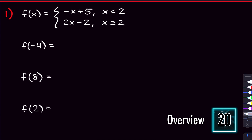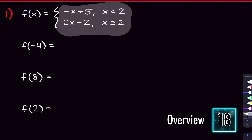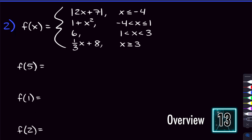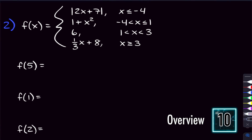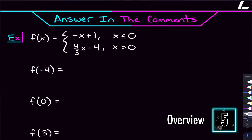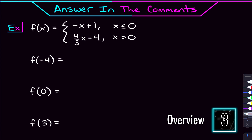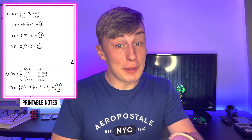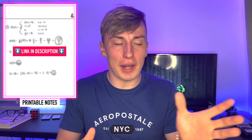We're gonna evaluate two piecewise functions in this video. The first one is a smaller piecewise function and we're gonna do three evaluations. Then we're going to have a larger piecewise function — this one has four functions in it and we're going to be doing four evaluations. I'll also give you a problem to try and answer in the comments. If you're looking for printable notes for this video, I've made those and they'll be linked right in the description. Also in the description, I have an extra video linked where we'll go through and solve four more evaluating piecewise functions problems.